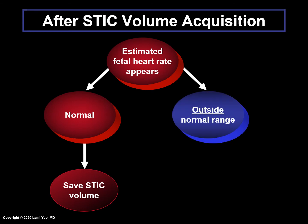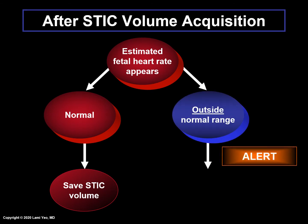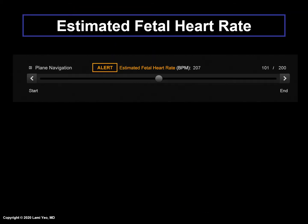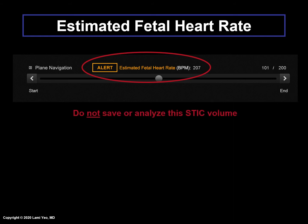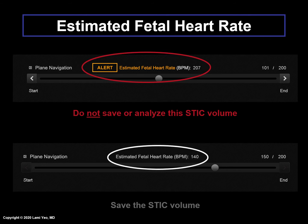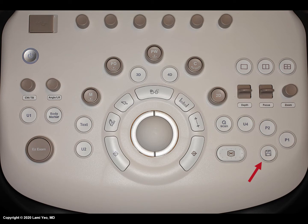However, if the fetal heart rate is outside the normal range, an orange alert message will appear and the STIC volume should not be saved. In the top example, the estimated fetal heart rate is 207 beats per minute, and therefore an orange alert appears — this STIC volume should not be saved or analyzed. In the bottom example, the estimated fetal heart rate is 140 beats per minute, which is within normal limits, and therefore this STIC volume should be saved. This is done by pressing the button with the floppy disk icon as shown here.